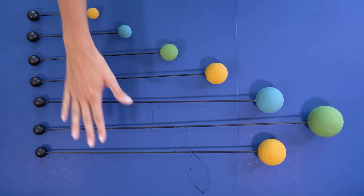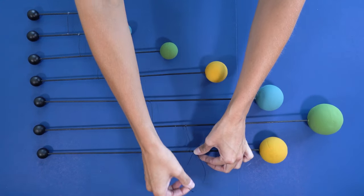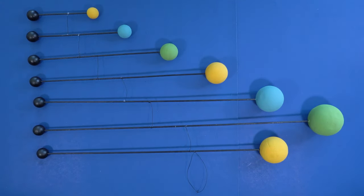Alright, now that I have all seven layers perfectly balanced, the last step is to tie a loop at the top and that way I'm ready to hang my sculpture.